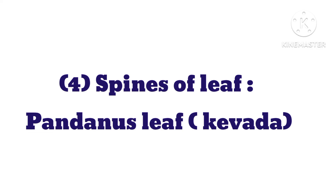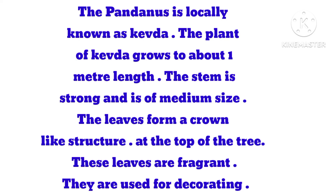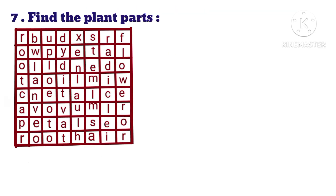Spines on leaf — Pandanus leaf (Kevda). Answer: The Pandanus is locally known as Kevda. The plant grows to about 1 metre in length. The stem is strong and of medium size. The leaves form a crown-like structure at the top of the tree. These leaves are fragrant and are used for decorating.